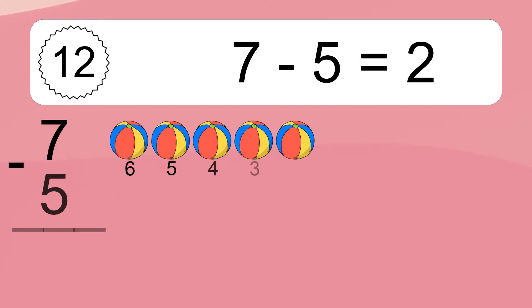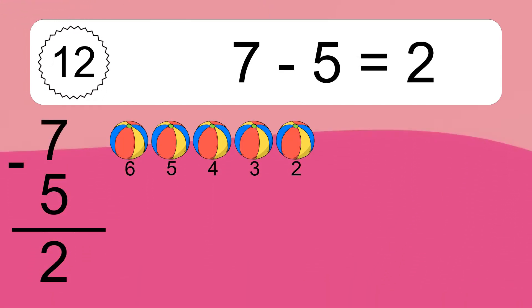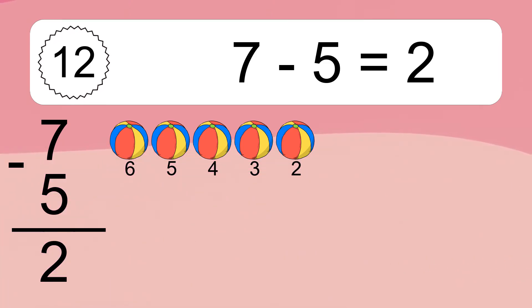7 minus 5 equals 2. Let's count it: 6, 5, 4, 3, 2.